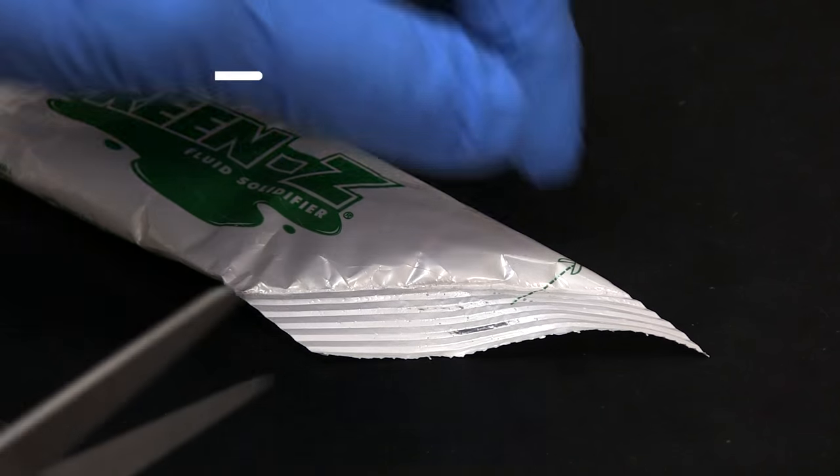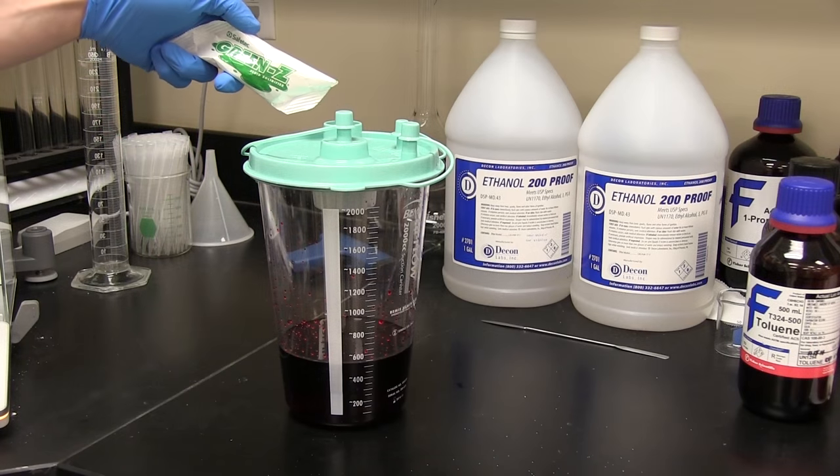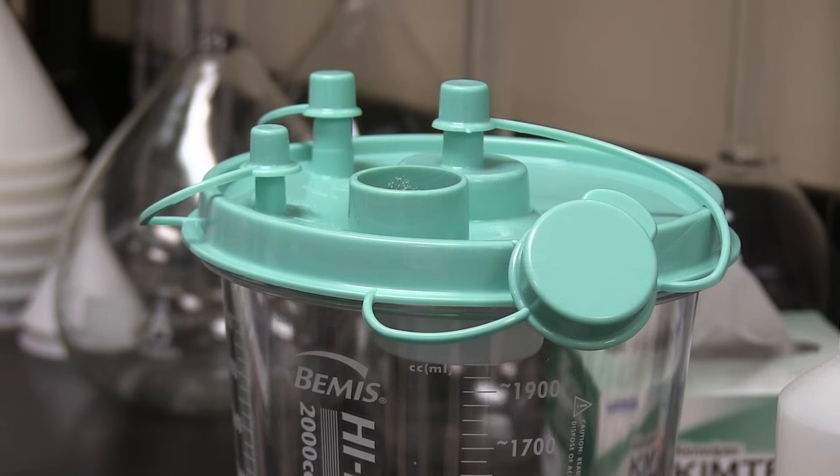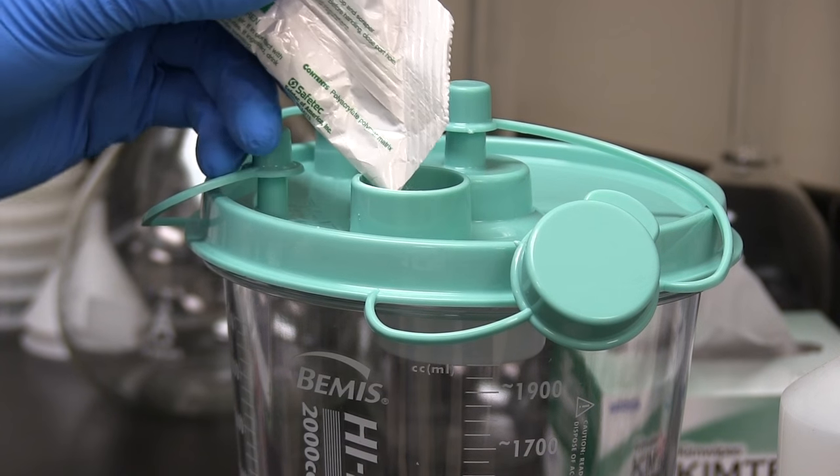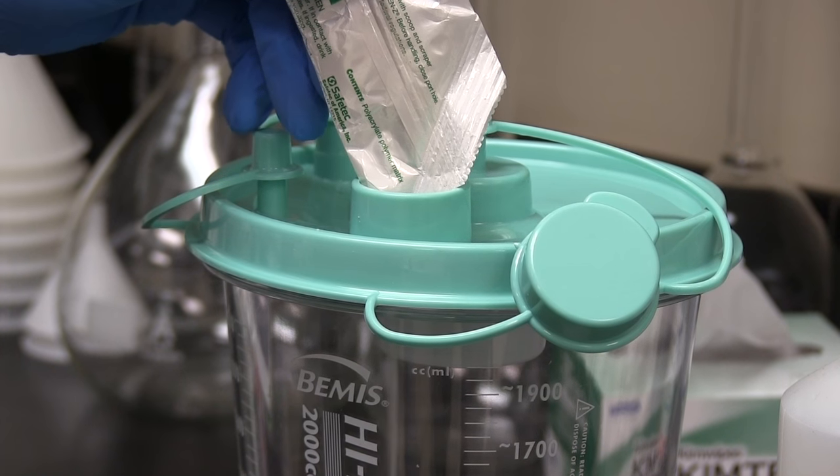For pour-in pouches, simply cut along either angled edge and enter the entire solidifier package into a canister, biohazard bag, or kick bucket. These pouches work great with an easy pour angled design and are ideal for narrow openings of suction canisters.